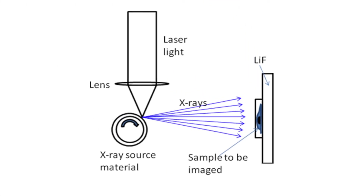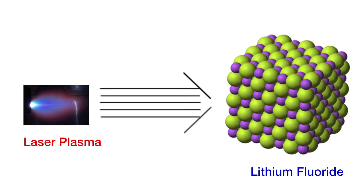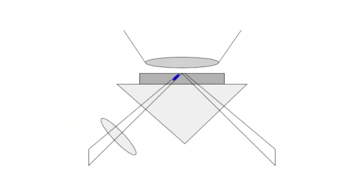The detector I plan to use is lithium fluoride. Lithium fluoride, when exposed to ionizing radiation such as soft X-rays, produces color centers. And when these color centers are exposed to blue light, they fluoresce and produce red light.